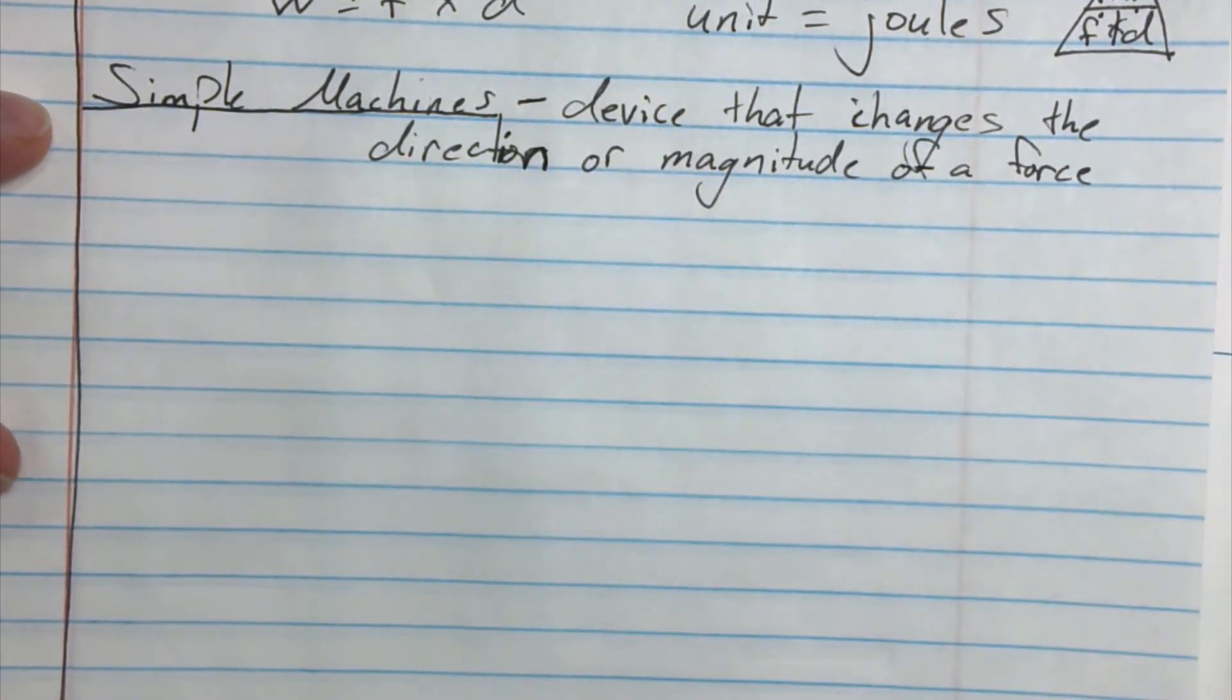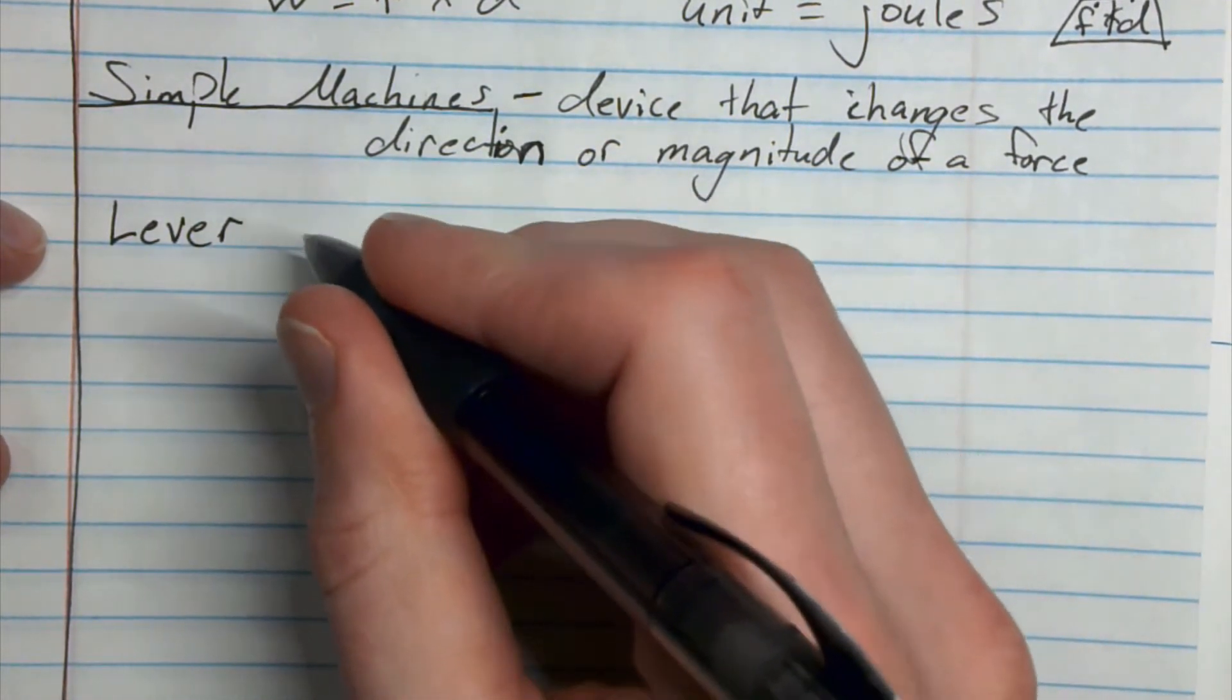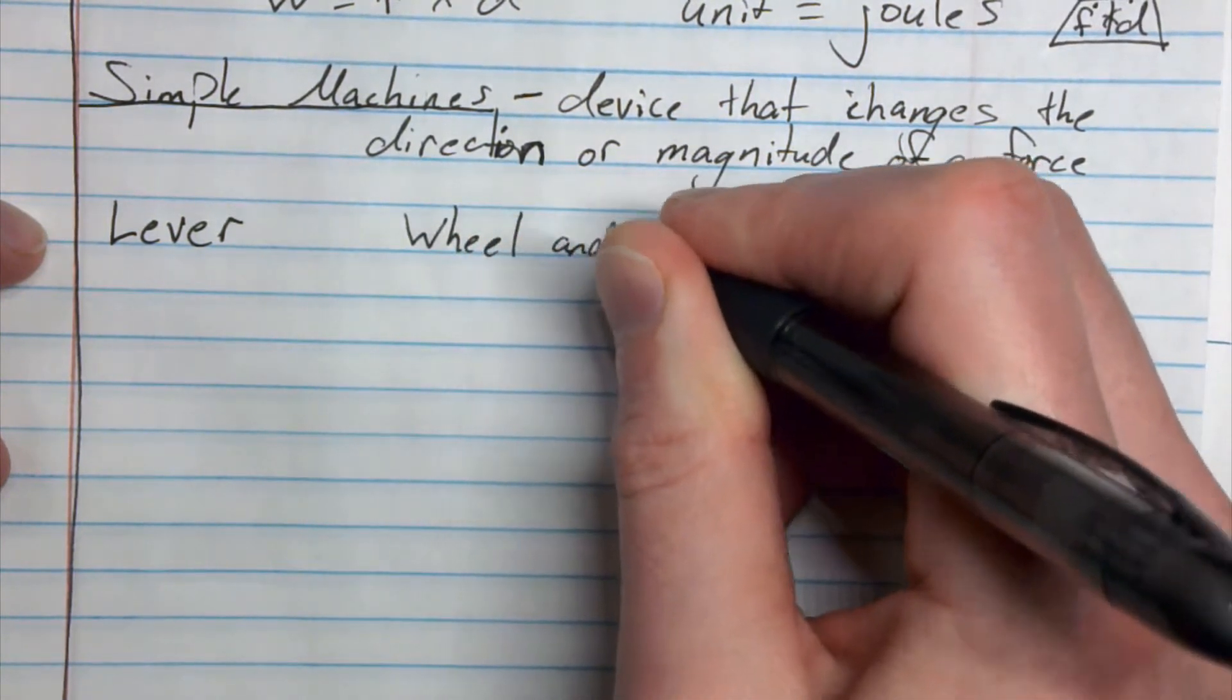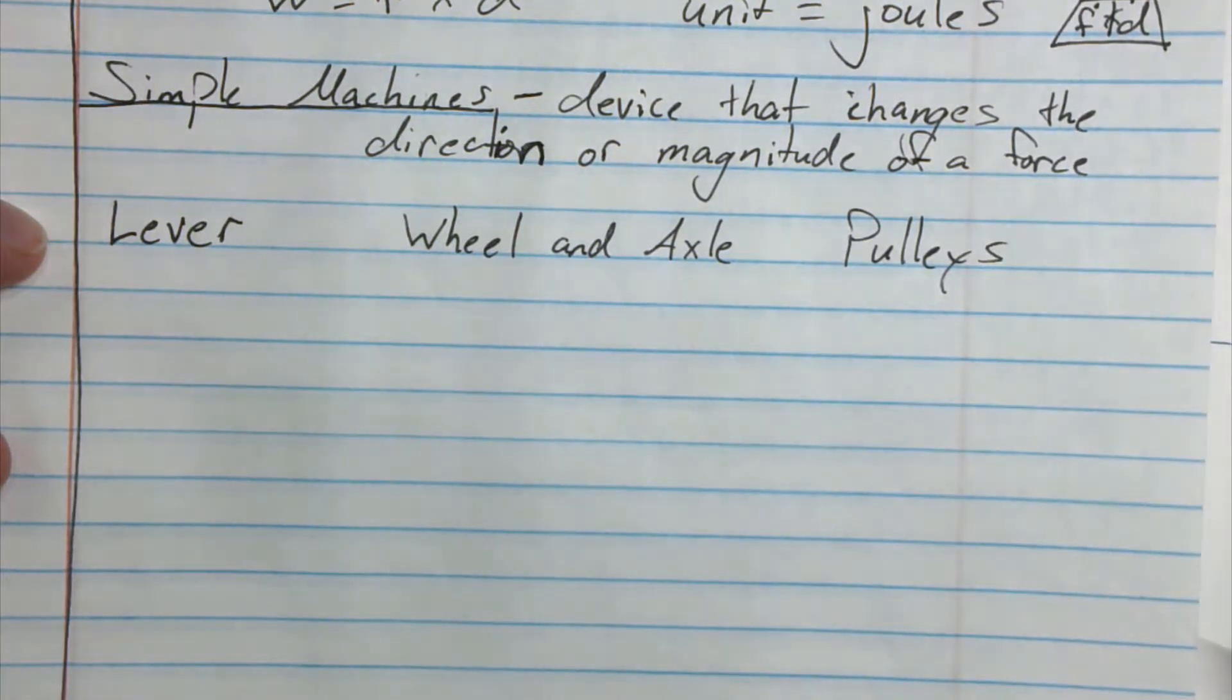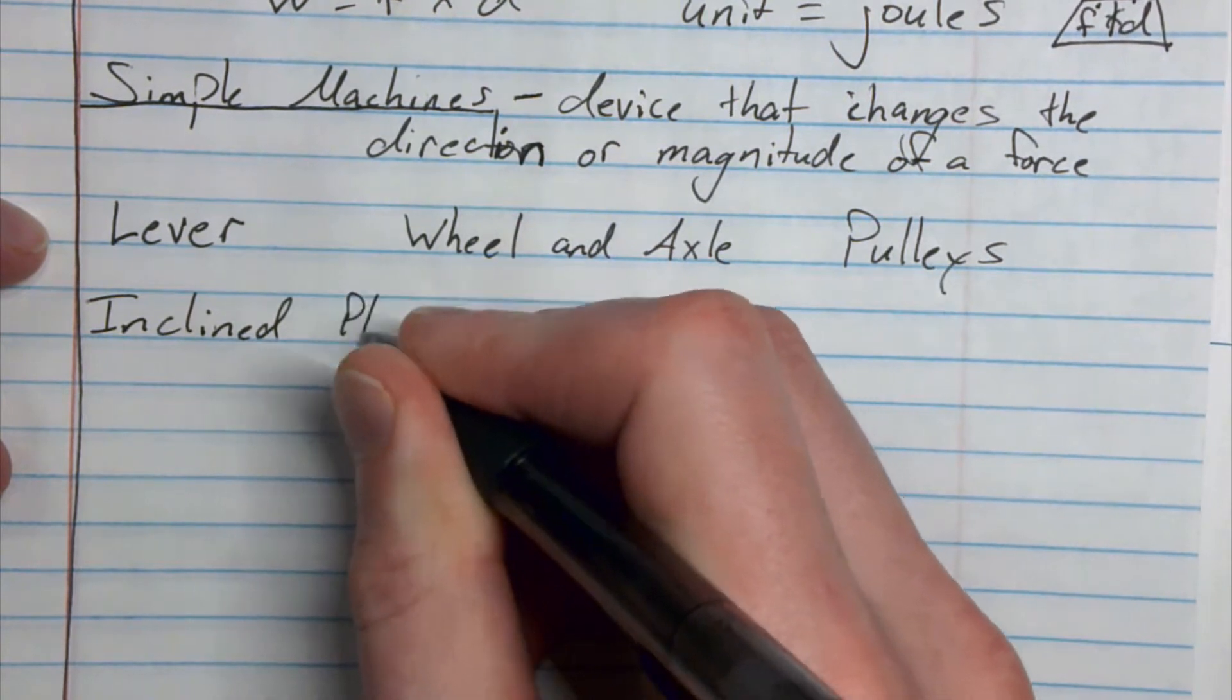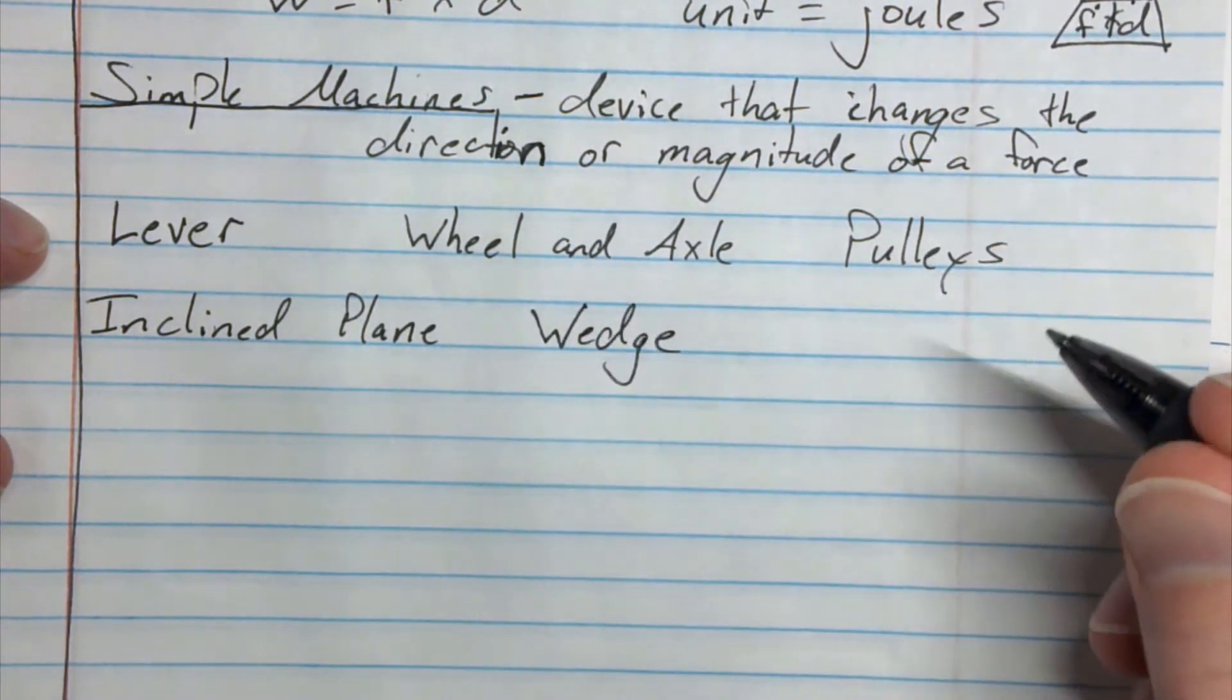Let's go ahead and write a list of a couple basic ones. We have a lever, and we have a wheel and axle, and we have some pulleys, inclined plane, a wedge, and a screw.